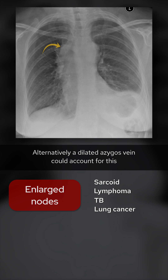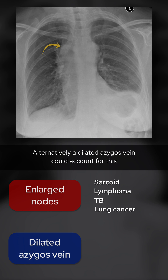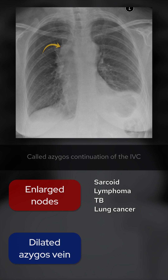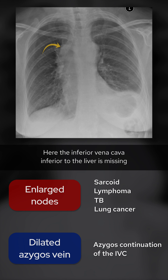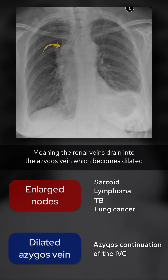Alternatively, a dilated azygous vein could account for this. One cause of this is a congenital abnormality called azygous continuation of the IVC. Here, the inferior vena cava inferior to the liver is missing, meaning the renal veins drain into the azygous vein, which becomes dilated.